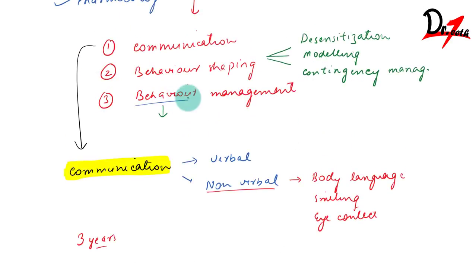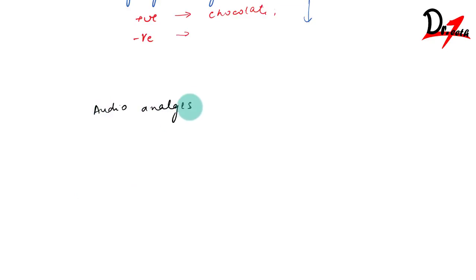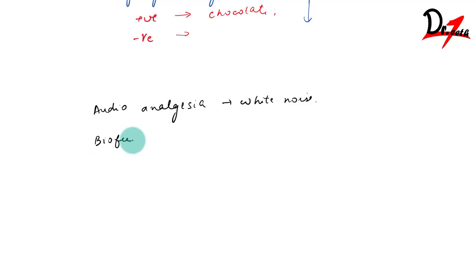Now we come to behavior management techniques. First is audio analgesia, also called white noise — we provide sound of such intensity that the patient gets distracted and finds it difficult to attend to anything else. Playing pleasant music can also reduce stress. Then there is biofeedback — textbooks mention instruments to detect physiological processes like electroencephalogram, but in practice, by observing the child you can get an idea of what he is going through.